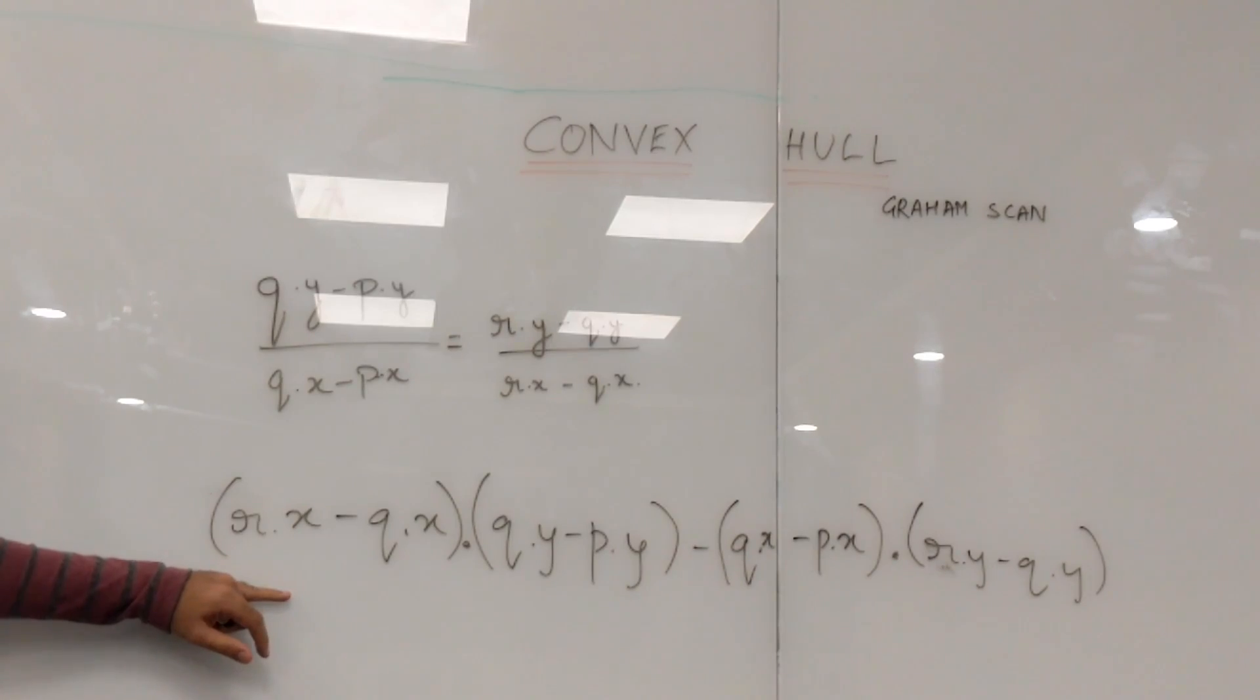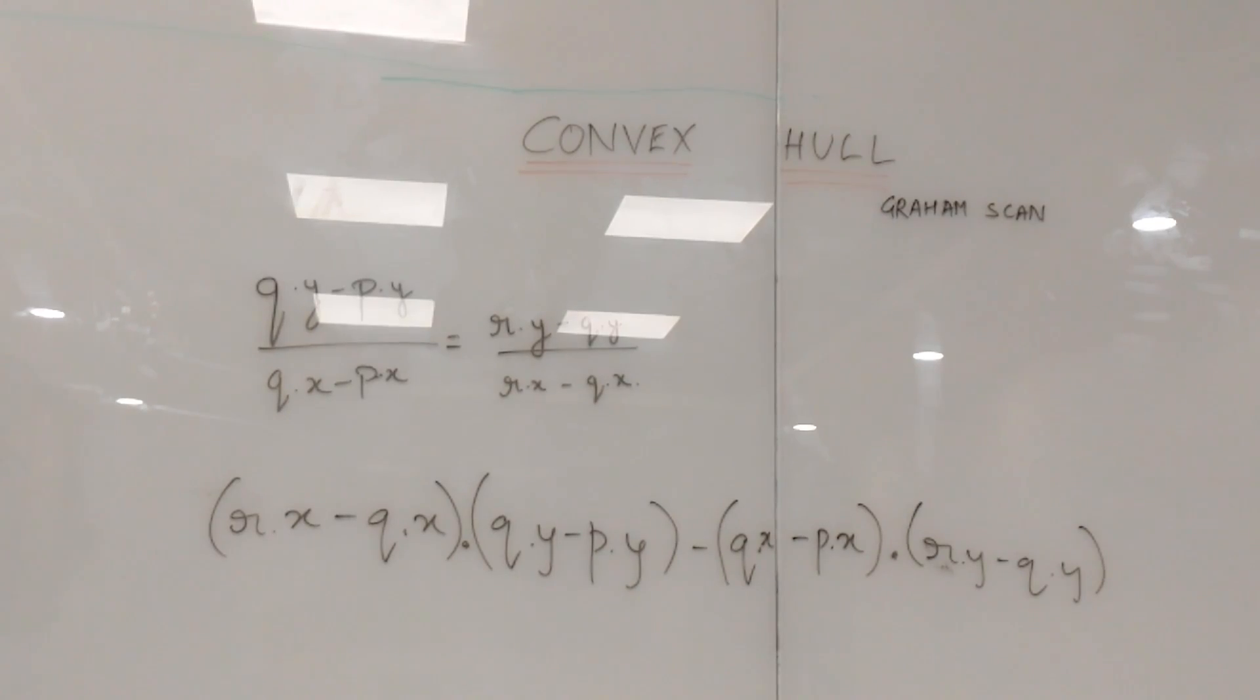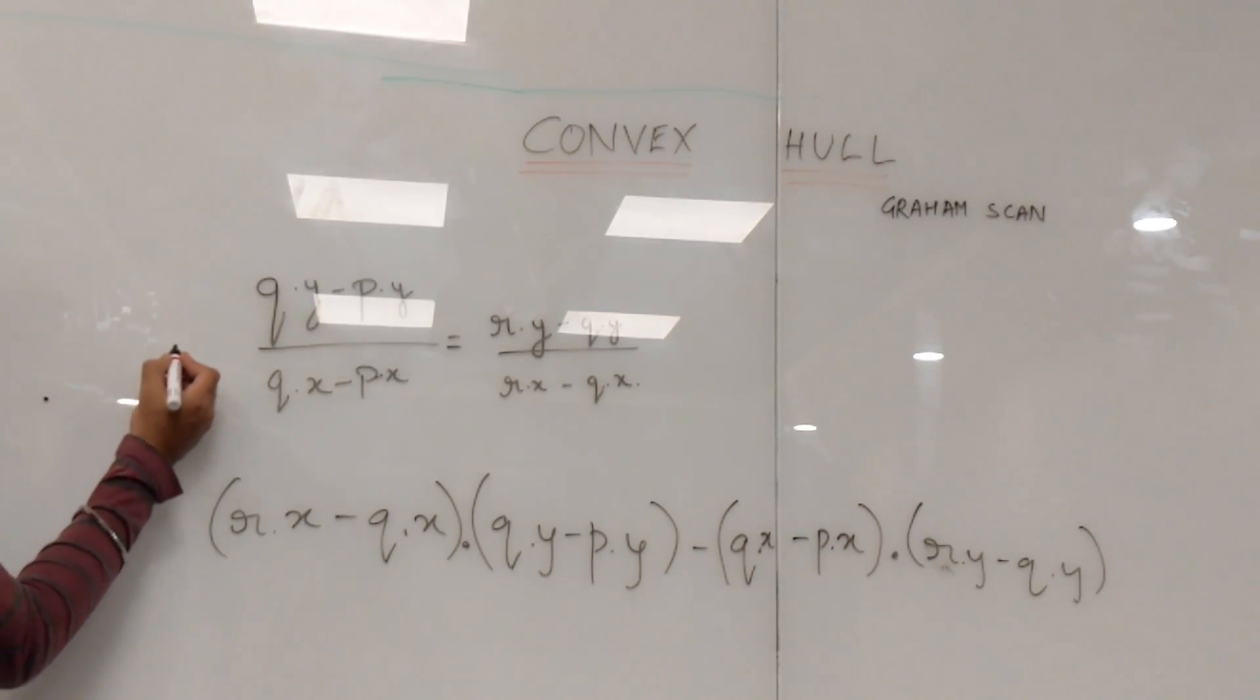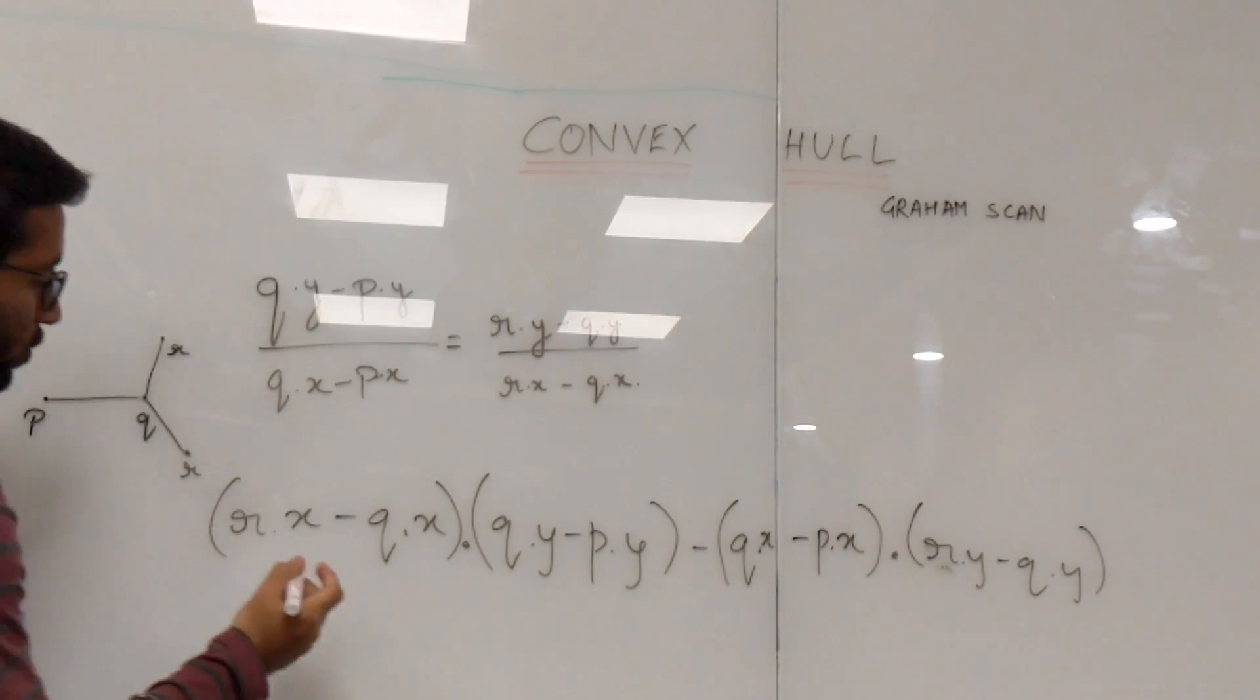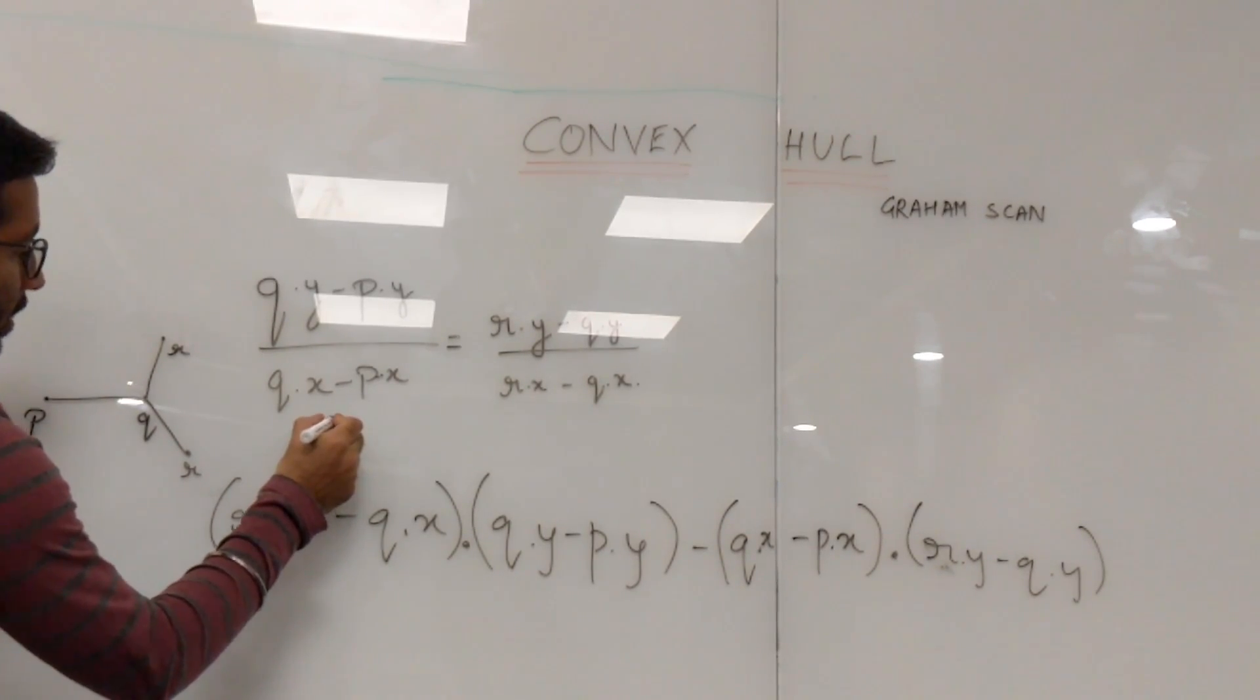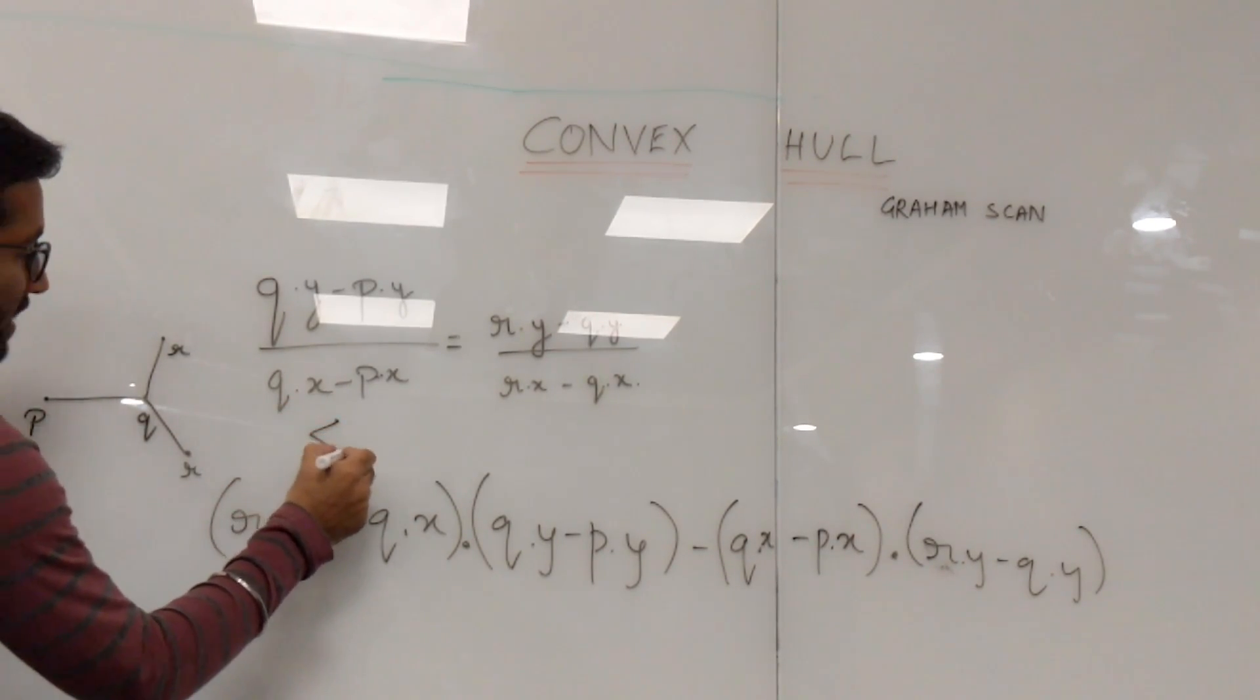If the value of this equation is zero, that means the three points are collinear as they have the same slope. If it is greater than zero, the points P, Q, and R will be making a clockwise angle, while if it is less than zero, they are moving in the anti-clockwise direction. As we saw in the previous figure, we always want an anti-clockwise angle, so we want to sort them in increasing order when it is less than zero.